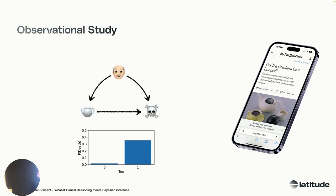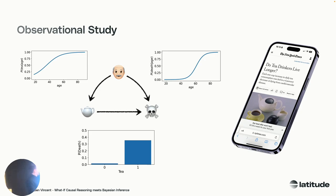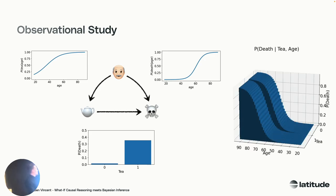How does drinking tea impact your probability of death? People who are a bit older drink more tea, and people who are older might die a bit faster — so those two things are correlated. They share a common effect on both variables — that's called a confounder. The probability of death given age goes up as you get older, and the probability of drinking tea also becomes higher as you age. If we look at the data grouped by age and controlling for it, we see that drinking tea is actually slightly reducing your probability of death at the same age.